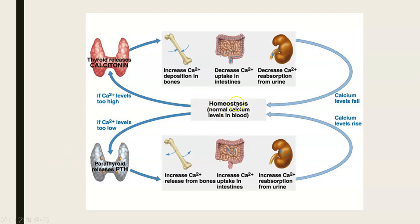This diagram shows the hormonal control in place to maintain calcium homeostasis. If calcium levels are too high, the extra-follicular cells of the thyroid gland sense this and release calcitonin. Calcitonin deposits excess calcium into bones, signals the intestines to decrease calcium absorption, and decreases calcium reabsorption in the kidneys — allowing more to pass into the urine — bringing blood calcium levels back down to normal.